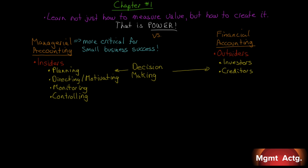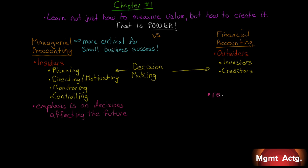The emphasis on managerial accounting is on decisions that affect the future. We have to decide what to make, who to make it for, how to make it — these are all things that will happen as we move forward. So we need to make the right decisions based on what we think it'll cost us, whereas financial accounting reports what has already happened. It reports on past activity, so it's historical in that sense.